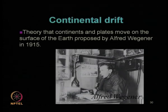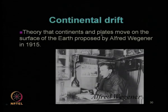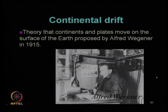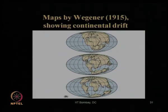Now let us see a theory called continental drift. The theory states that the continents and plates of the earth's crust are composed of various plates which move on the surface of the earth relative to each other. This was proposed by Alfred Wegener in 1915. He first proposed this continental drift theory about the movement of crustal plates, and this is the map proposed by Wegener in 1915 showing the continental drift.